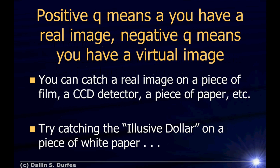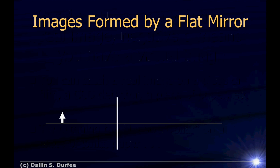Positive Q means real image, negative Q means virtual image. You can catch a real image on film, a CCD detector, or a piece of paper. Try catching the elusive dollar on a white piece of paper — go up to the elusive dollar display, look at it, then put a piece of paper there. Get on the other side of the piece of paper and you'll be able to see the dollar projected onto it. Fun experiment to do.